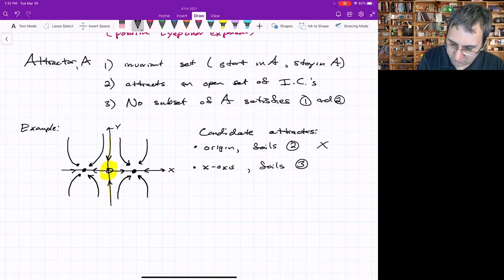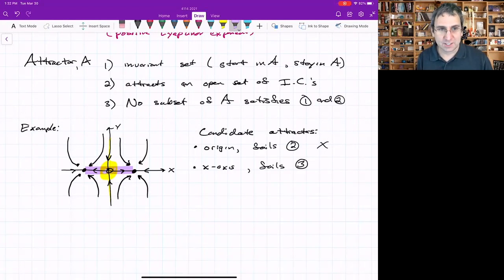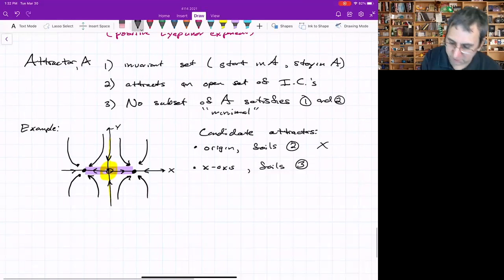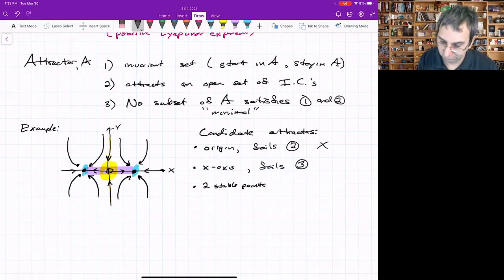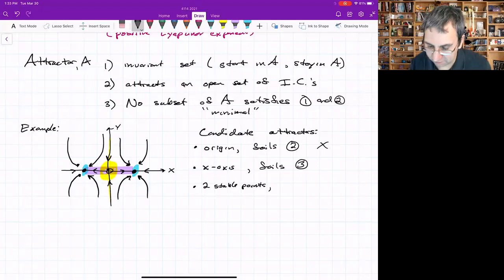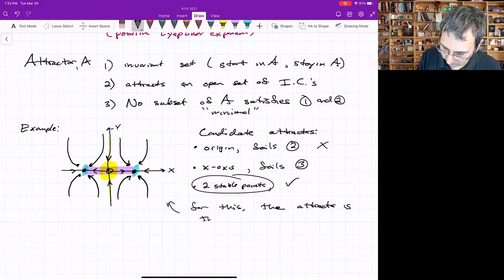How can we see that? If you look at the interval between these two stable points, that's also an attractor. It's just a portion of the x-axis. Because there is a subset of the x-axis that everything gets attracted to, this fails the minimal condition. Everything on the x-axis eventually goes to these fixed points. So the two stable points—there's no condition here that this has to be a connected set—if you start on them, you stay on them so they're invariant, they do attract an open set of initial conditions. The right side stable point attracts everything to the right of the y-axis, and the left side attracts everything to the left. Because they're points, there's nothing smaller. So they also satisfy three. For this system, the attractor is the two stable fixed points.